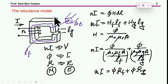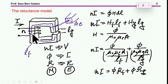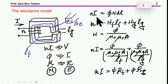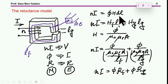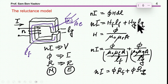Let me start off with the reluctance model, which is very well known and used quite a bit. Here I'm showing an inductor built around a ferrite core with a gap. Here are the windings, this is the gap, this is the magnetic path length, and this is the length of the gap. This ferrite core has some cross-section area A_e. Starting with Ampere's law, we know that the MMF — n times i — is equal to the circular integral of the magnetic field times dl. In this particular case, we have two sections: one is the ferrite and one is the gap, giving us a magnetic field within the ferrite and a magnetic field within the gap, with their respective magnetic path lengths.